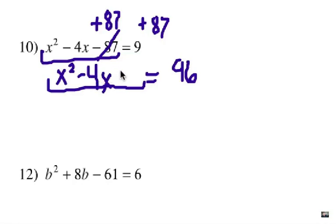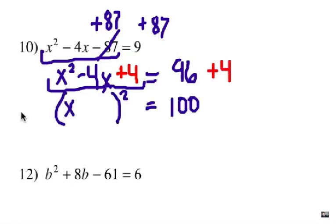and in order to do that, I take half of negative 4, which is negative 2, and then I square it. That's the appropriate third term here. And if I add 4 on the left, I have to add 4 on the right.